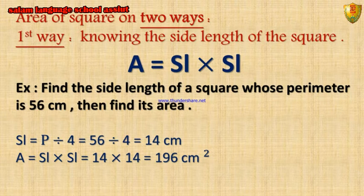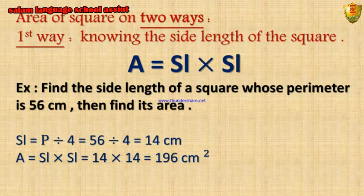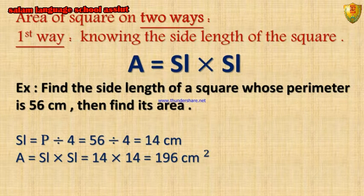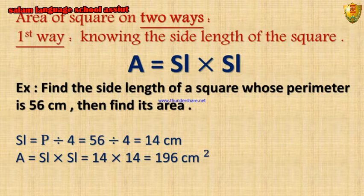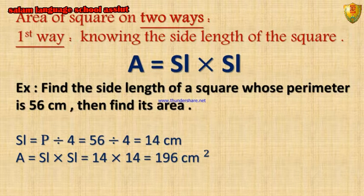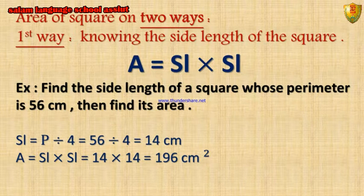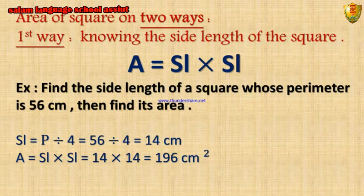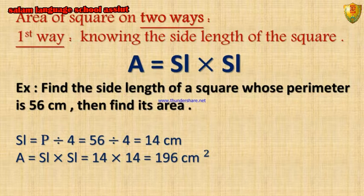We can get the area of the square in two ways. The first way, which we studied in primary 4, is by knowing the side length of the square: area equals side length times side length. Example: find the side length of a square whose perimeter is 56 cm, then find its area. Side length equals perimeter divided by 4, equals 56 divided by 4, equals 14 cm. Then area equals side length times itself, equals 14 times 14, equals 196 cm².